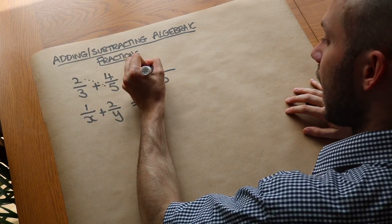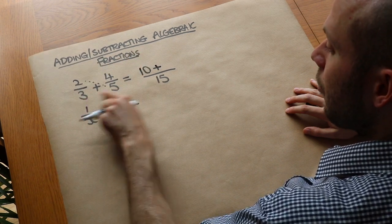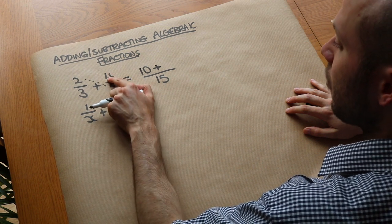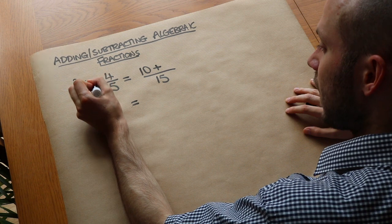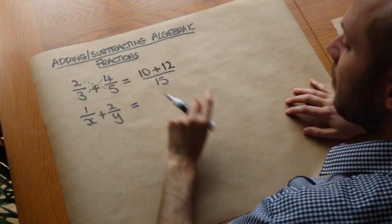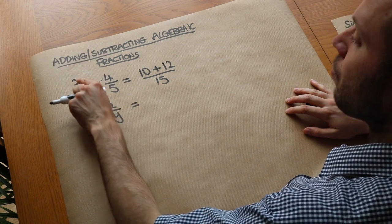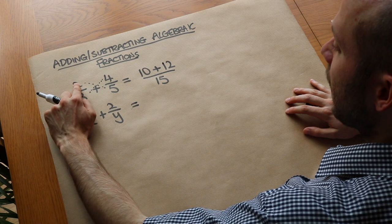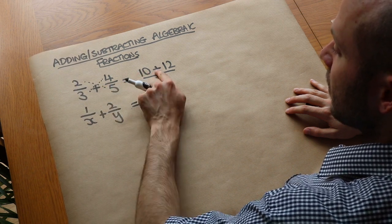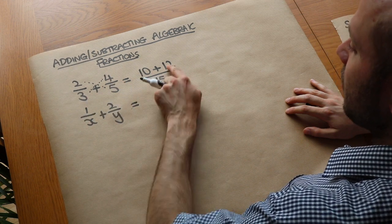And then we add. That 5 got multiplied by 3 to get to 15, so the 4 also has to get multiplied by 3. And 4 diagonally multiplied by that 3 would be 12. So one method to add fractions is to multiply the denominators and then cross multiply the numerators — the 2 gets multiplied by the 5 to get 10, and the 4 gets multiplied by the 3 to get 12.